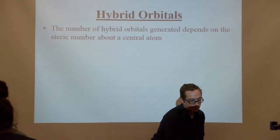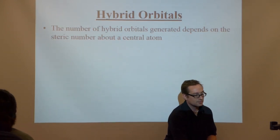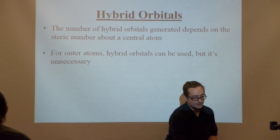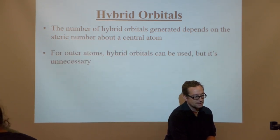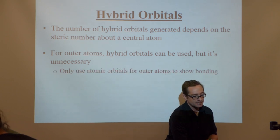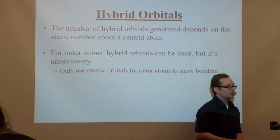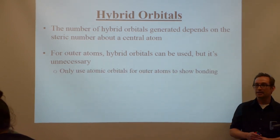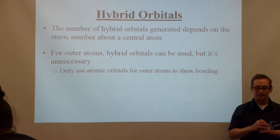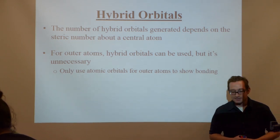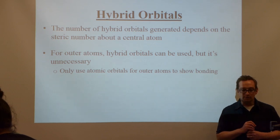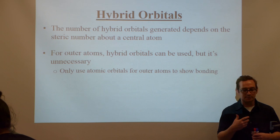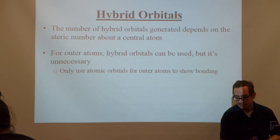The number of hybrid orbitals generated depends on the steric number about a central atom. For outer atoms, hybrid orbitals can be used but it's not necessary — your textbook author does not hybridize outer atoms. You only use atomic orbitals for outer atoms, but we use hybrid orbitals for central atoms.